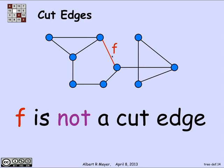F is not a cut edge because even if I delete edge F, there is still a path from every vertex to every other vertex here so that F is not disconnecting anything.